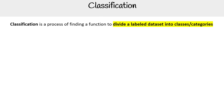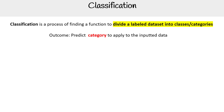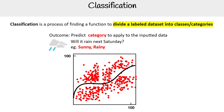Let's take a look at classification. This is the process of finding a function to divide a labeled data set into classes or categories. The idea is we're going to predict a category to apply to the input data — for example, will it rain next Saturday, or is it going to be sunny?